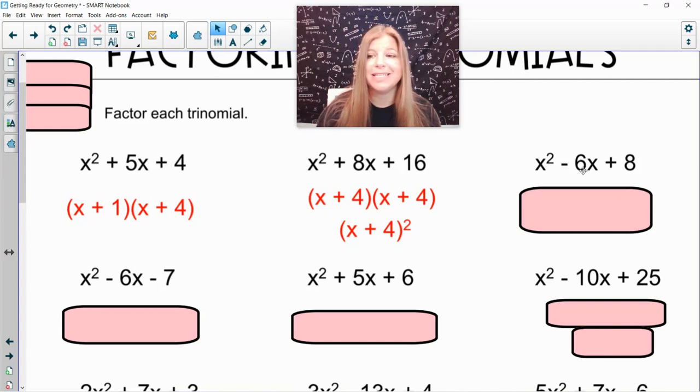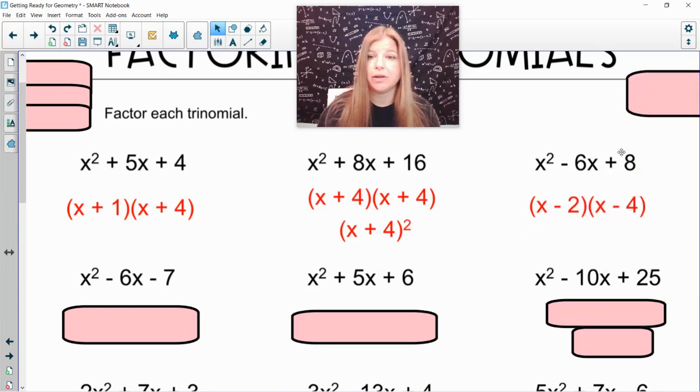Next one, x² - 6x + 8. Factor pairs of 8: 1 times 8, 2 times 4. Which one of those factor pairs could you make a negative 6 out of? 1 and 8? No. 2 and 4? Yeah, totally. What kind of 2 and what kind of 4 would add up to get a negative 6? It should be a negative 2 and a negative 4. Now look at this. A negative 2 and a negative 4 will multiply to get a positive 8 and they're going to add up to get negative 6. That's what I'm looking for. The two numbers that multiply to get c that have a sum of b.